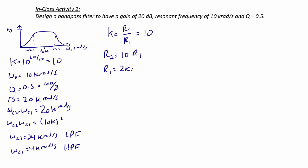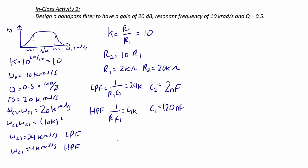Letting R1 = 2 kilohms, R2 = 20 kilohms. The cutoff frequency for the low-pass filter is 1/(R2·C2) = 24k, so with R2 = 20 kilohms, C2 = 2 nanofarads. For the high-pass filter, 1/(R1·C1) = 4 kiloradians per second, so with R1 = 2 kilohms, C1 = 120 nanofarads. Now we can draw the circuit, with input Vi(s), a 2-kilohm resistor and 120-nanofarad capacitor forming the passive high-pass filter.